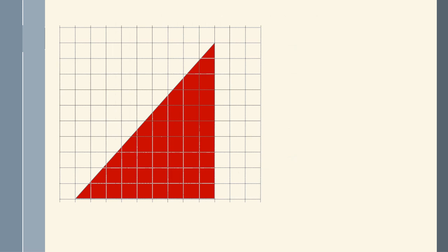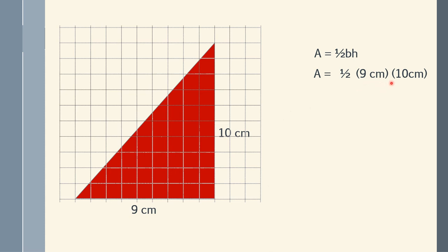We have the triangle. The base is 9 cm and the height is 10 cm. Using the formula, area equals one-half base times height. So we have one-half times 9 times 10 cm, which gives us one-half of 90 cm squared. The final answer is 45 cm squared.